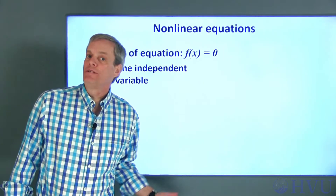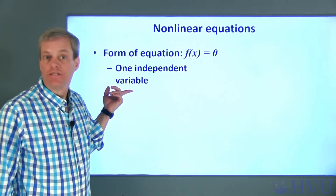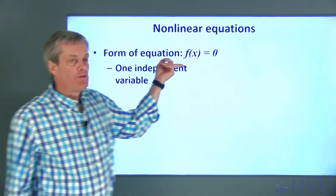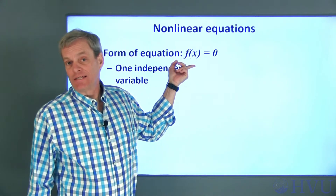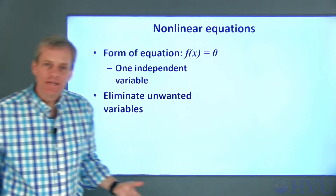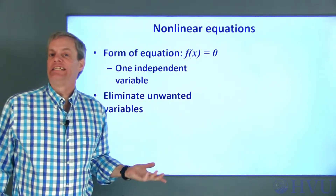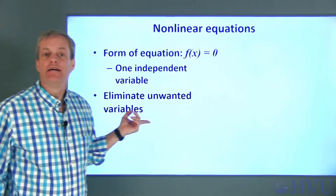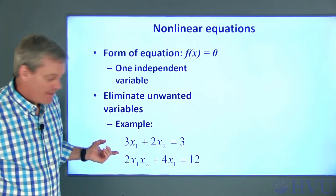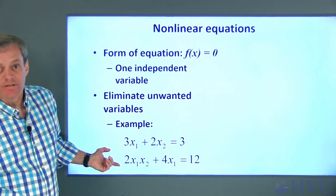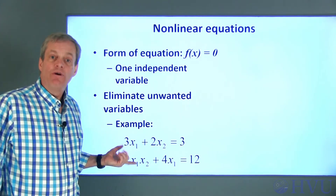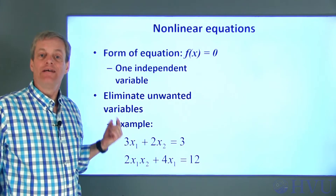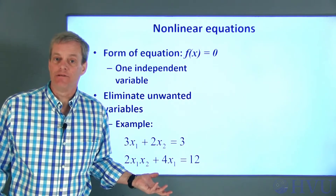In this video, I'll only talk about solving nonlinear equations that are a function of a single independent variable. The form I'll put the equation in will be f(x) = 0. This is a fairly standard form, and nonlinear systems of equations can be placed in this form by eliminating the undesired unknowns. For example, given a system of equations, I can find a single equation that's a function of x1 by solving one of the equations for x2 and then substituting that into the other equation.